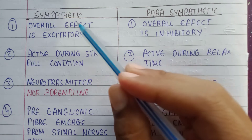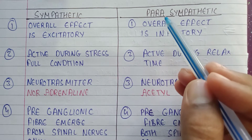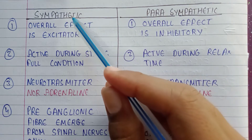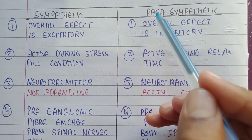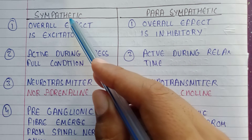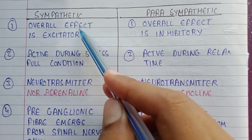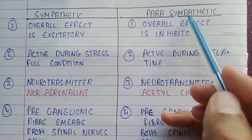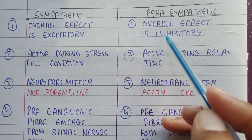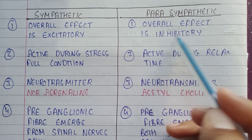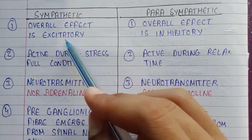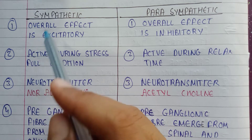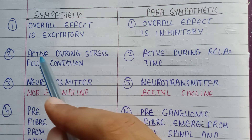The difference between the sympathetic nervous system and parasympathetic nervous system. The first point of difference is that in the sympathetic nervous system the overall effect is excitatory, whereas in the parasympathetic nervous system the overall effect is inhibitory.